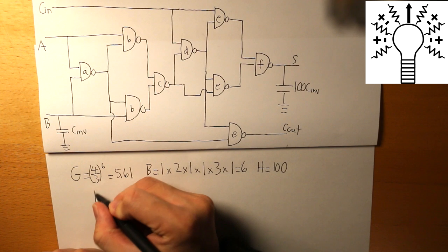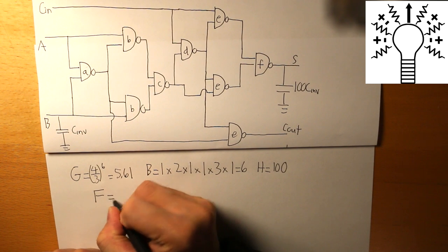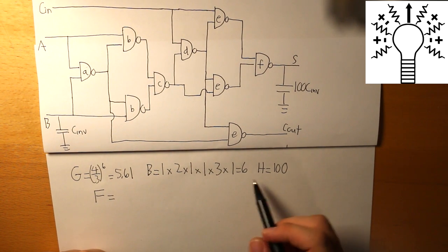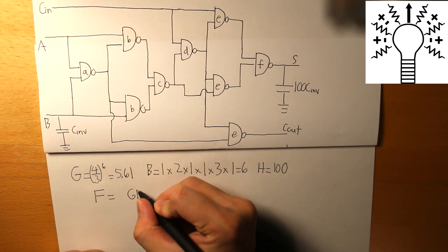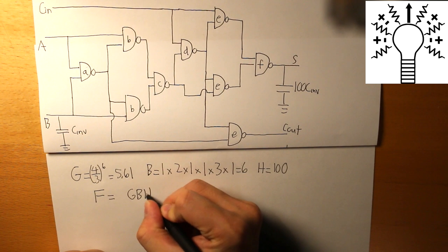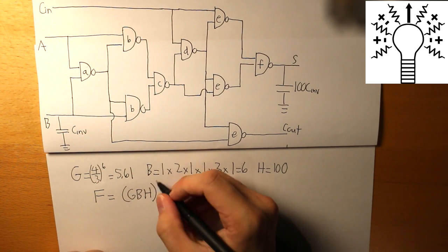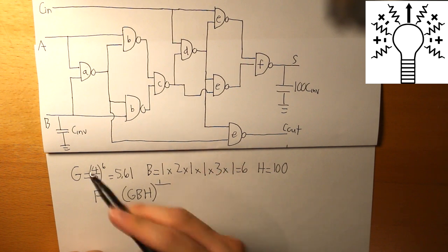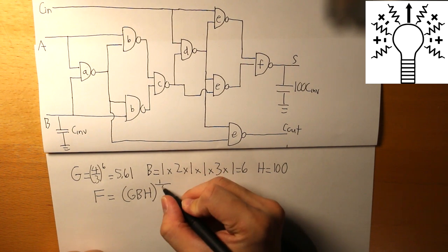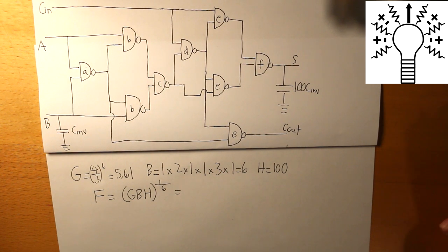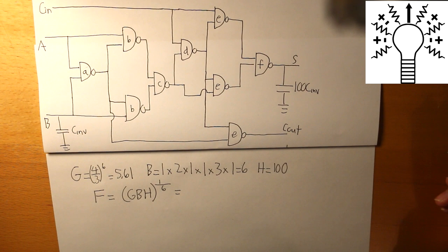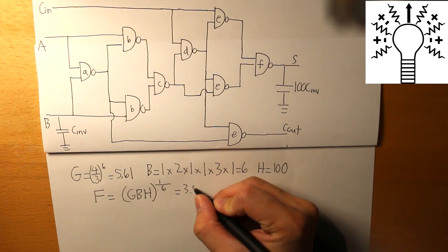Now we can get our effort delay. We take these three numbers that we got — G, B, H — and then put it to the power of how many stages there are, which is six again, and what we get is 3.87.